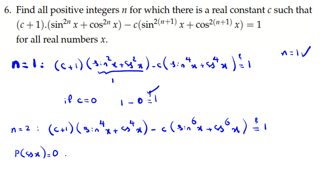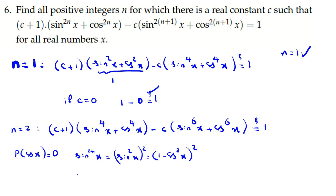This is one of the most important ideas in algebra and polynomials. Let me show sin⁴x in terms of cos x: sin⁴x = (sin²x)² = (1 - cos²x)². And sin⁶x = (sin²x)³ = (1 - cos²x)³. So I can express everything in terms of cosine, and when two polynomials are equal, all related coefficients must be equal.